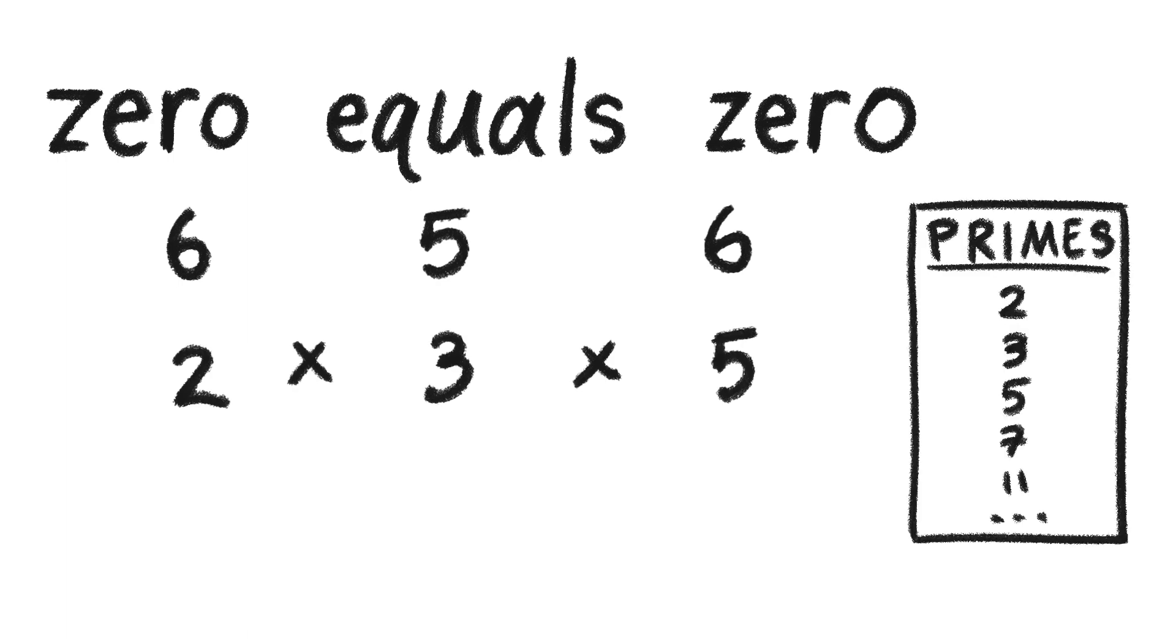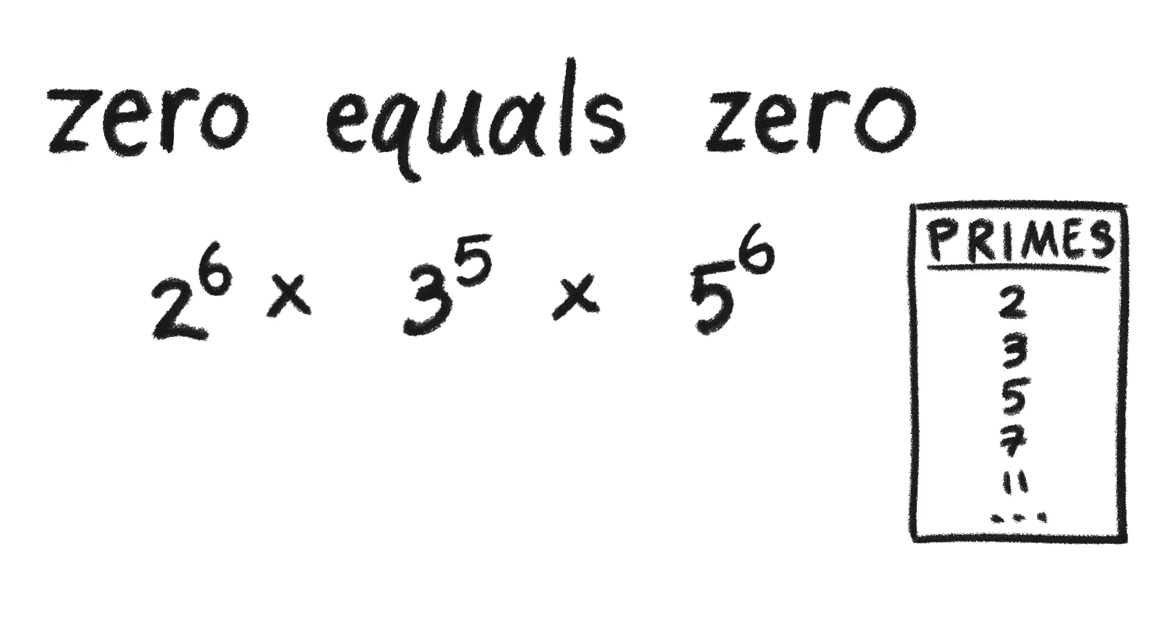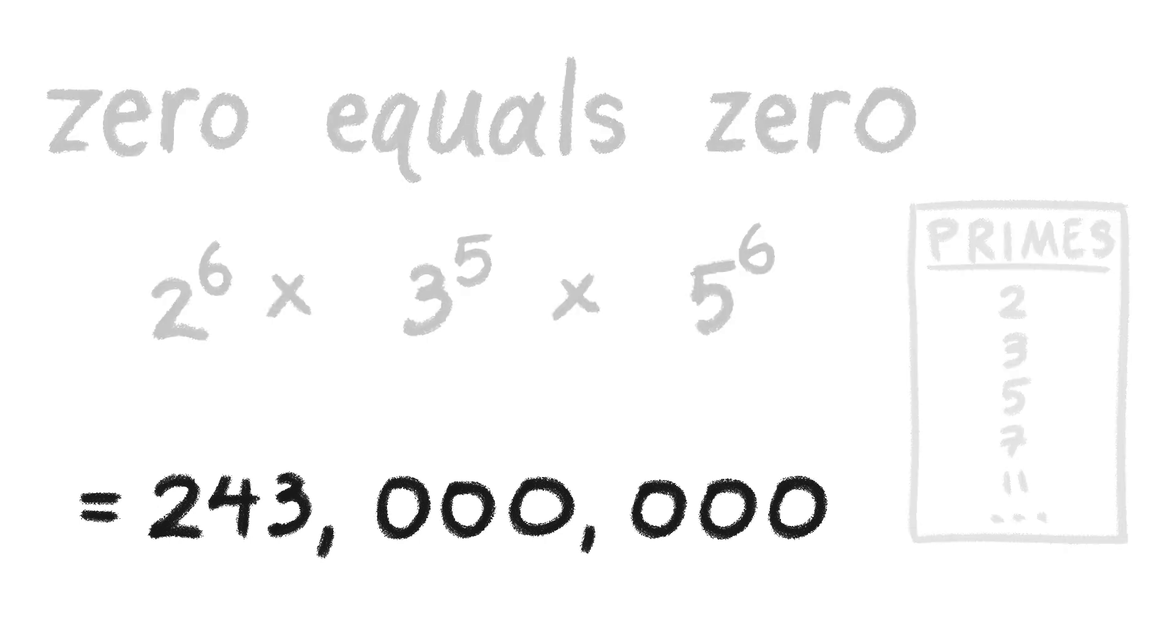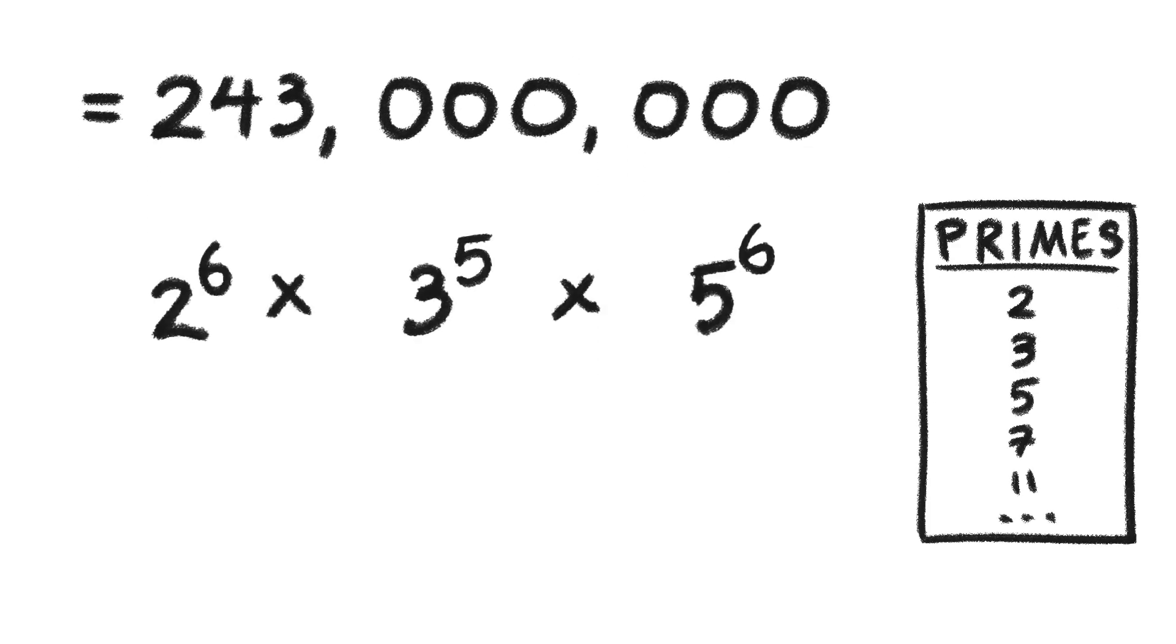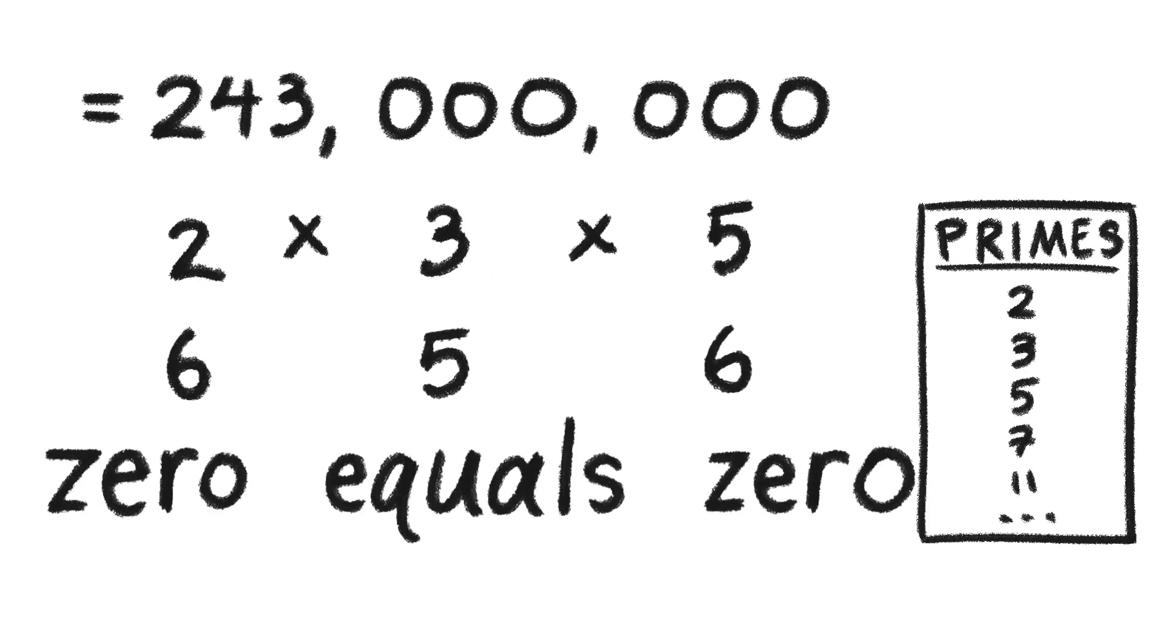Zero equals zero. The words correspond to numbers, which become the exponents of the first three prime numbers, giving us the Gödel number 243 million. And since numbers have unique prime factorization, we can get back the original sentence.